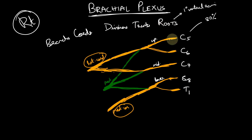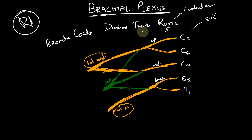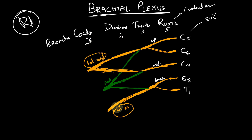To review: there are five roots — C5, C6, C7, C8, and T1 — three trunks (upper, middle, and lower), and six divisions (three anterior and three posterior). Of the six divisions, two anterior divisions form the lateral cord, all three posterior divisions form the posterior cord, and the anterior division of the lower trunk continues as the medial cord, giving three cords total. So: five roots, three trunks, six divisions, three cords.